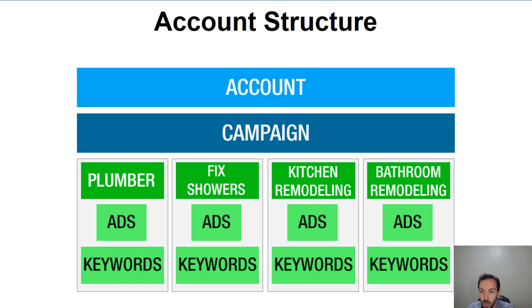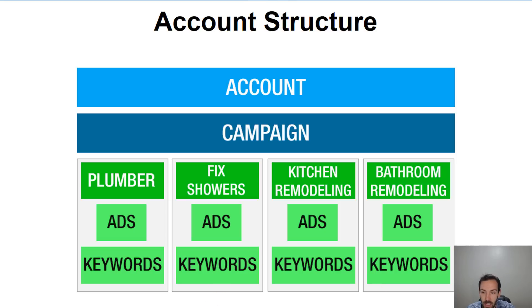So if you've had any experience with Google AdWords, you would understand a little bit how the account structure works. It's account, campaign, ad group, ads, and keywords. I like to look at it that ads are further up the chain — they're more important than the keywords — because the ads determine what keywords should go into an ad group.